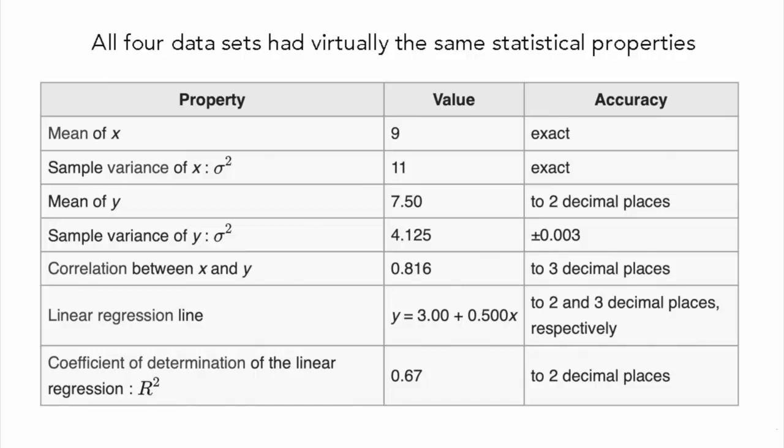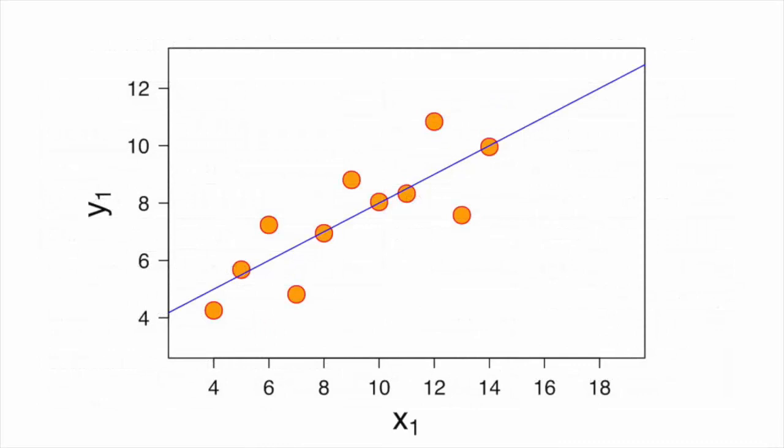Anscombe showed how off the mark that assumption could be. The four sets of data he constructed, despite having the same basic statistical properties, looked totally different when plotted out.